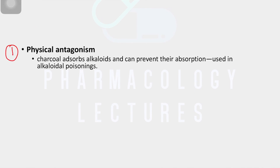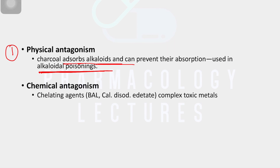Antagonism is of different types. First is physical antagonism, which depends on the drug's physical property. For example, charcoal is used in many types of poisoning because it prevents absorption of toxic drugs from the intestine or stomach. Charcoal has adsorptive properties for alkaloids and prevents their absorption — clinically useful in alkaloid or alcohol poisoning to adsorb the toxin and help the patient.